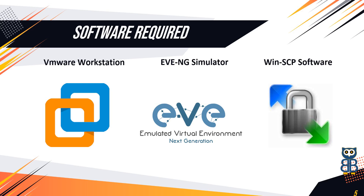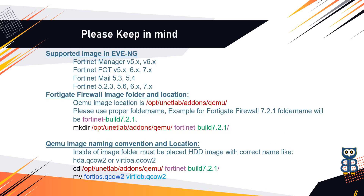You must remember a few things before uploading the image in EVE-NG. For example, what would be the directory or path where to upload the FortiGate Firewall Image? Also, does EVE-NG Simulator support raw images? Are there any guidelines to be followed before uploading the FortiGate Firewall Image in EVE-NG Simulator? The EVE-NG Simulator provides the flexibility to support a variety of images; however, it doesn't mean all images can be loaded in the same folder or that raw images can be used. So you need to find the right folder for the FortiGate Firewall Image.